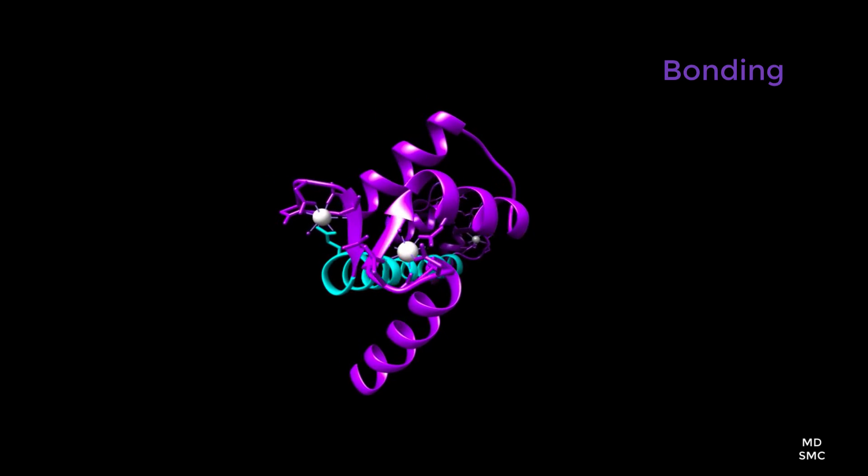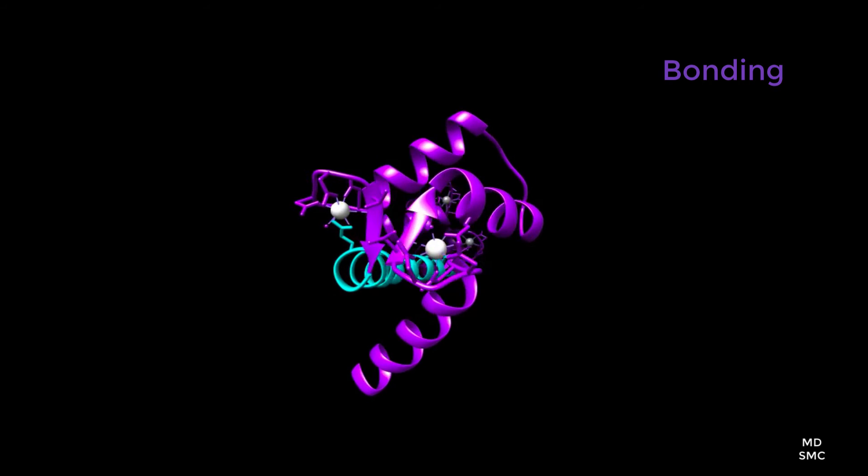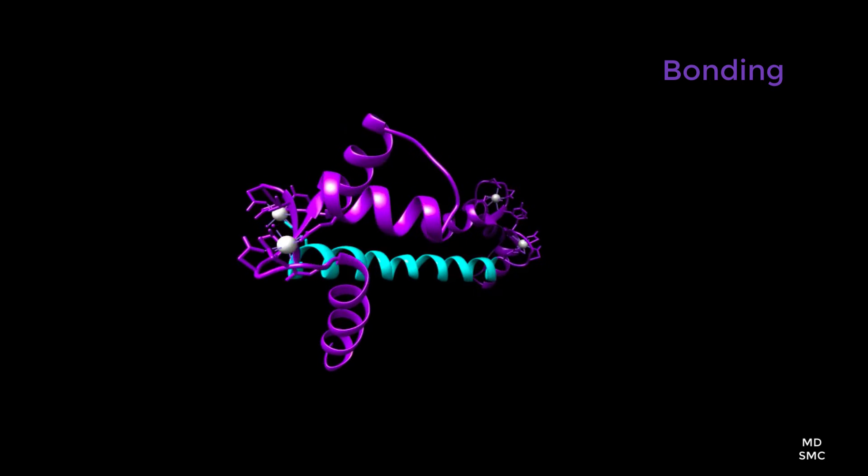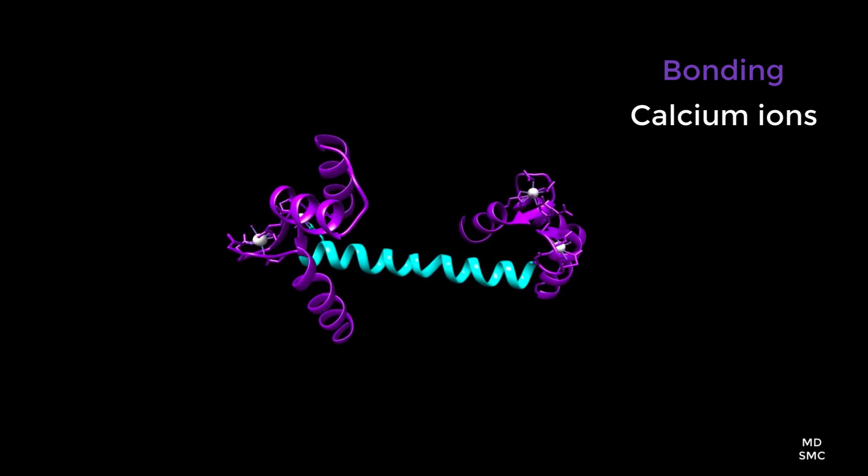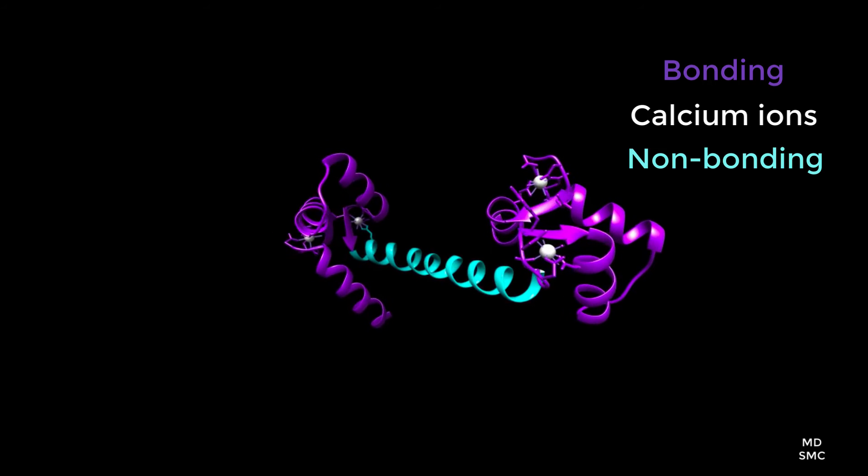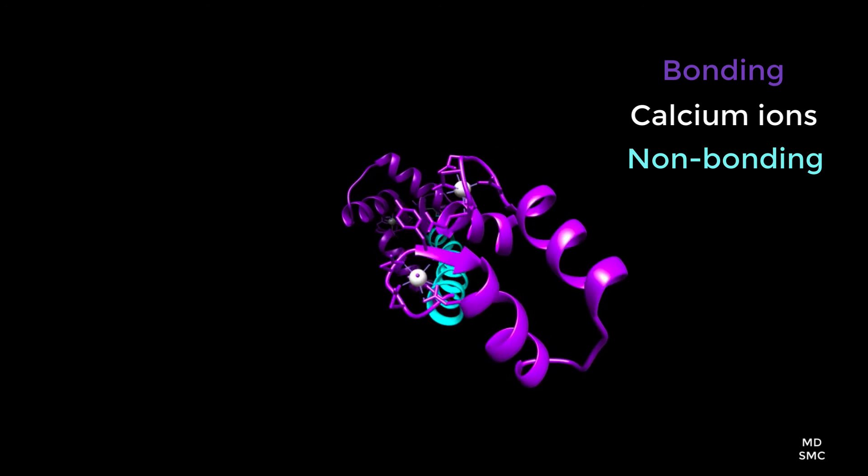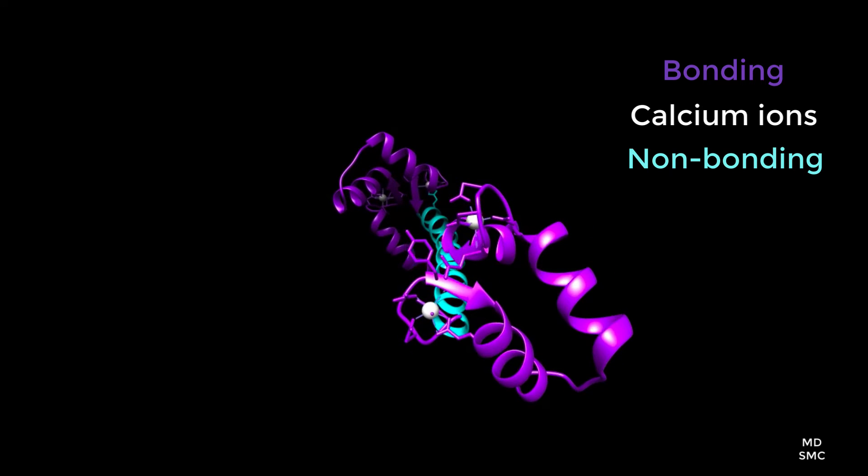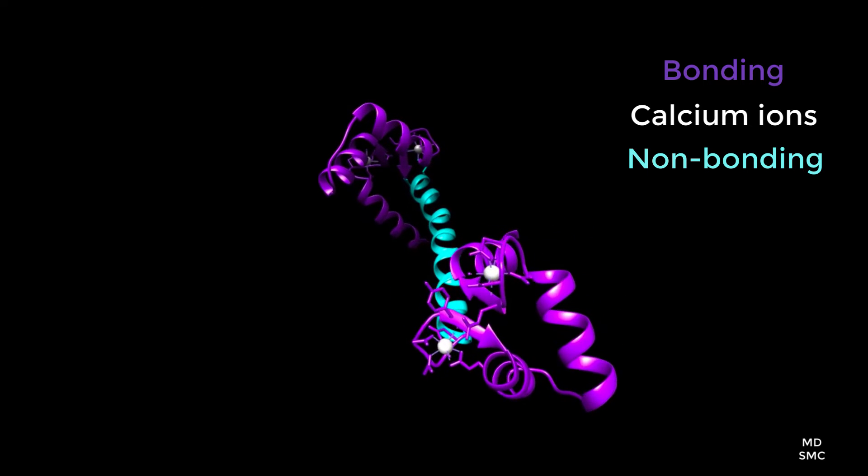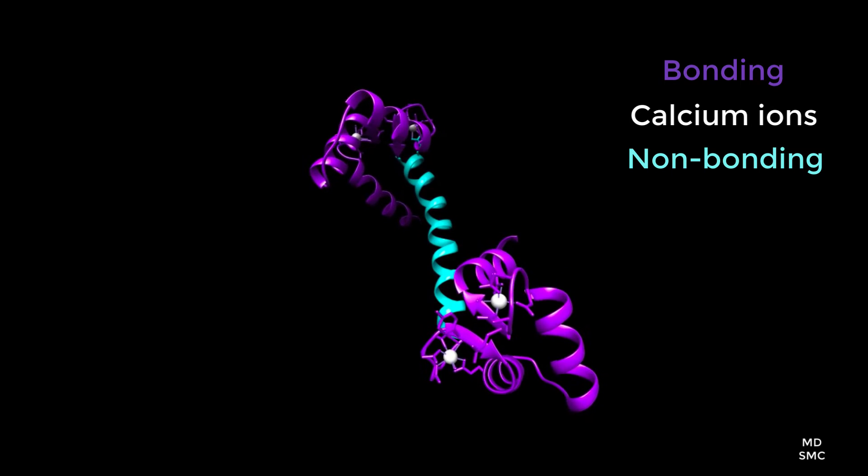The purple regions contain the sites in which calcium ions bind during an increase in concentration, shown as white atoms, whereas the light blue region represents an area of the protein that will facilitate protein-protein interactions to continue the cascades of reactions that is calcium signal transduction.